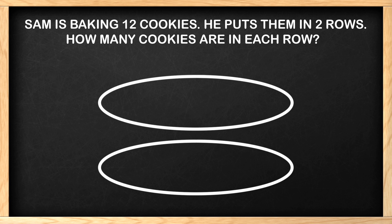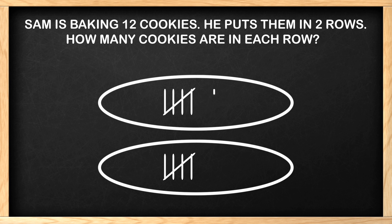We are now going to put a tally mark in each row as we count to twelve. One, two, three, four, five, six, seven, eight, nine, ten, eleven, twelve. We have placed twelve tally marks in the two rows. How many are in each row? There are six tally marks.